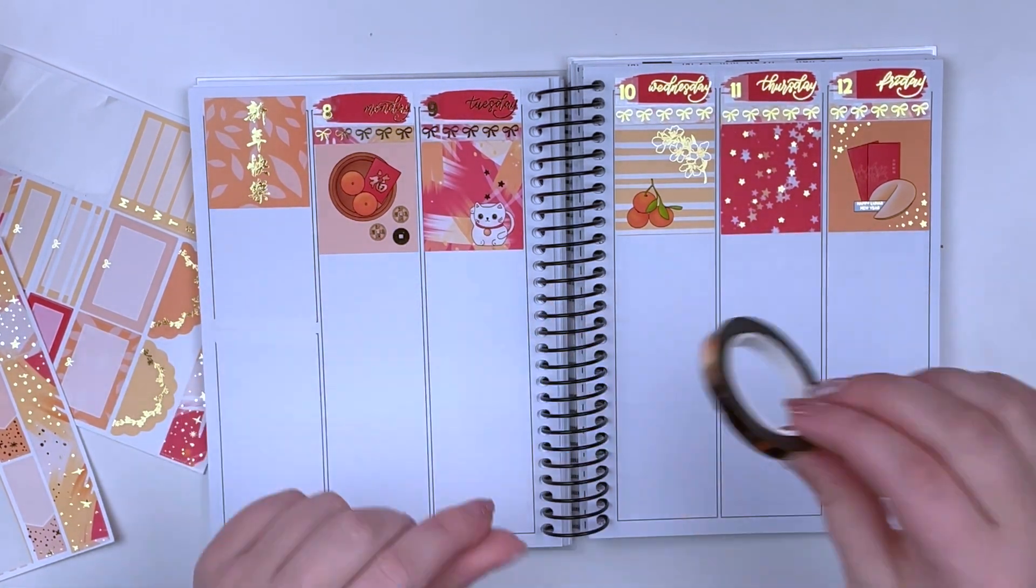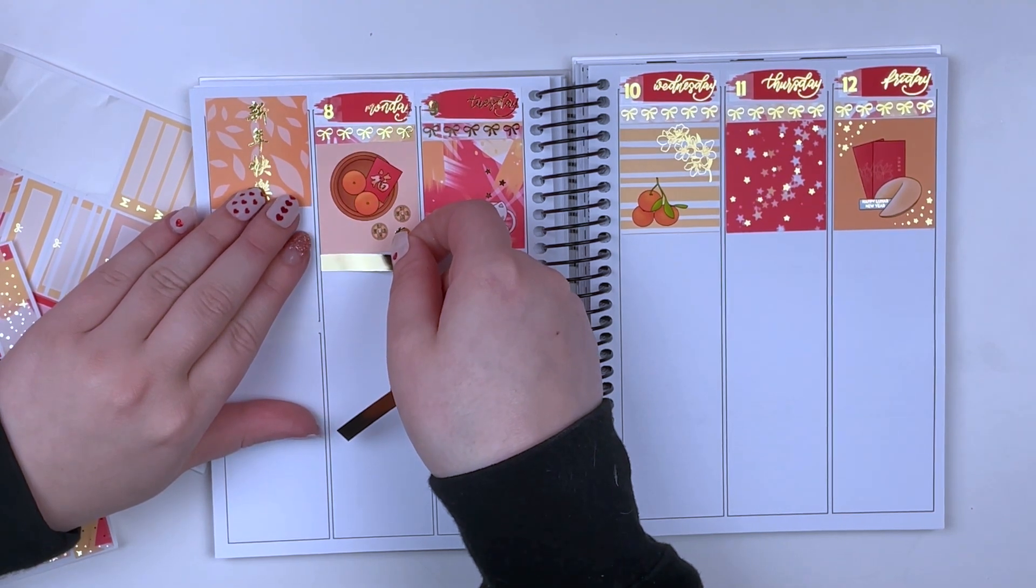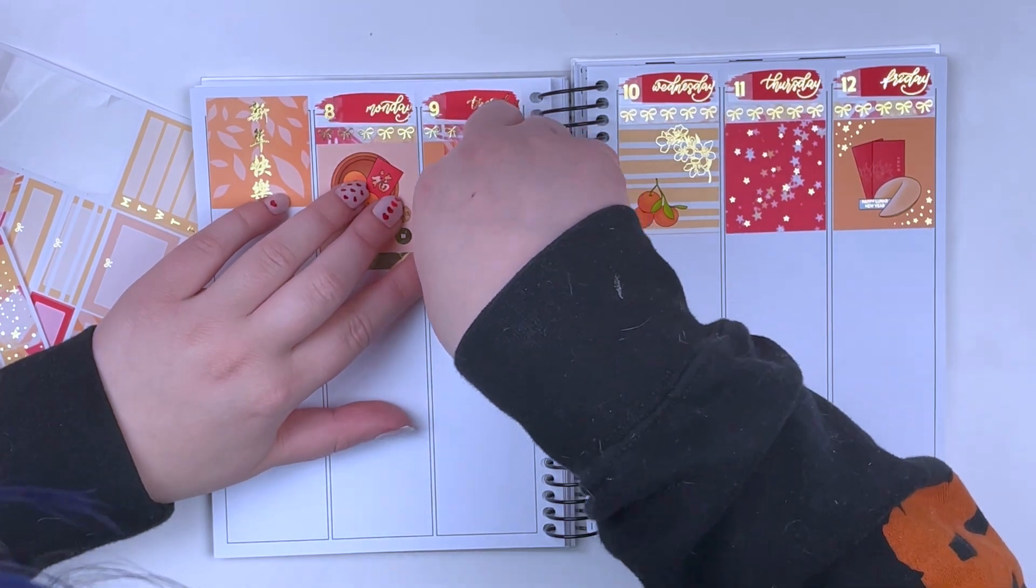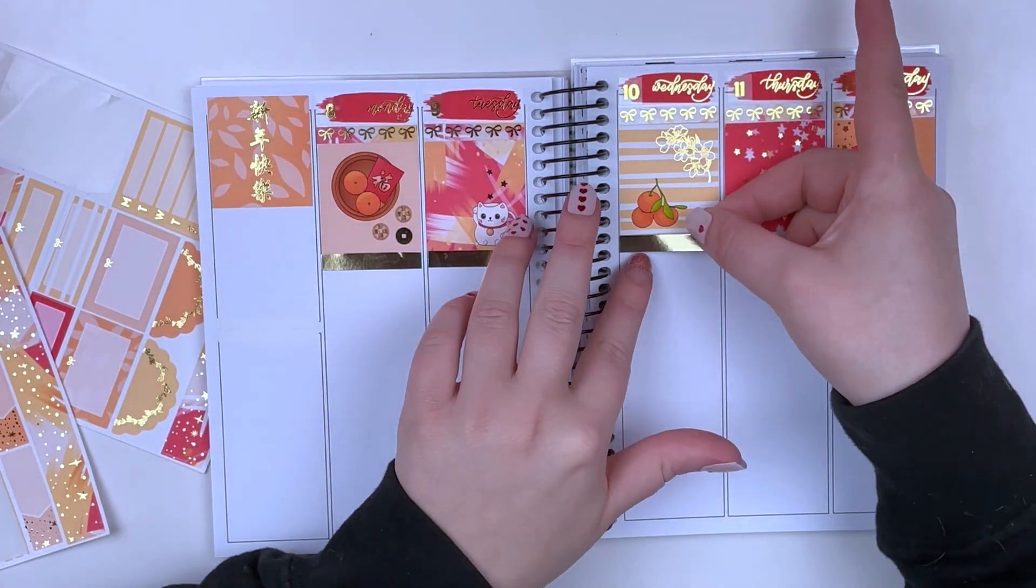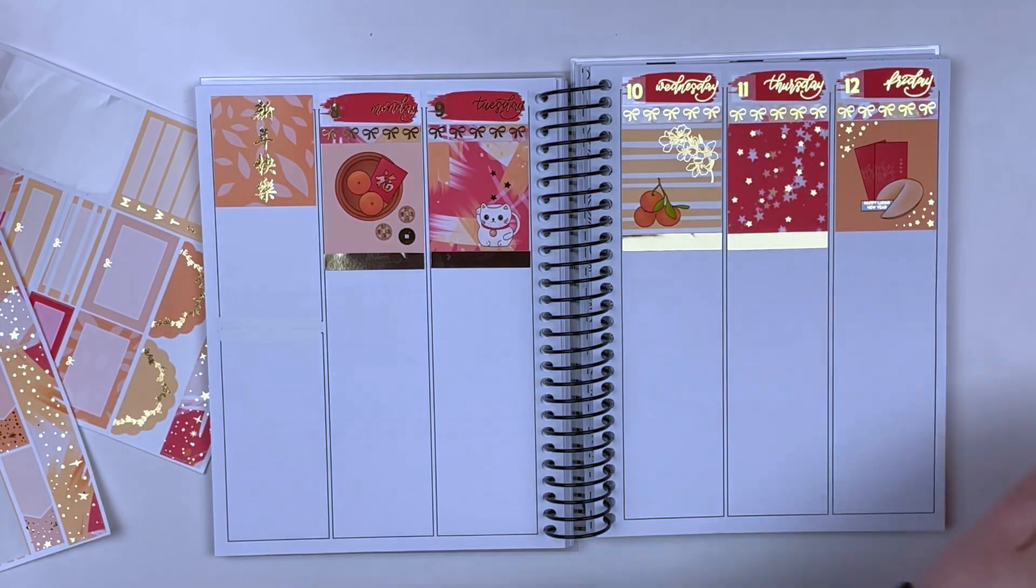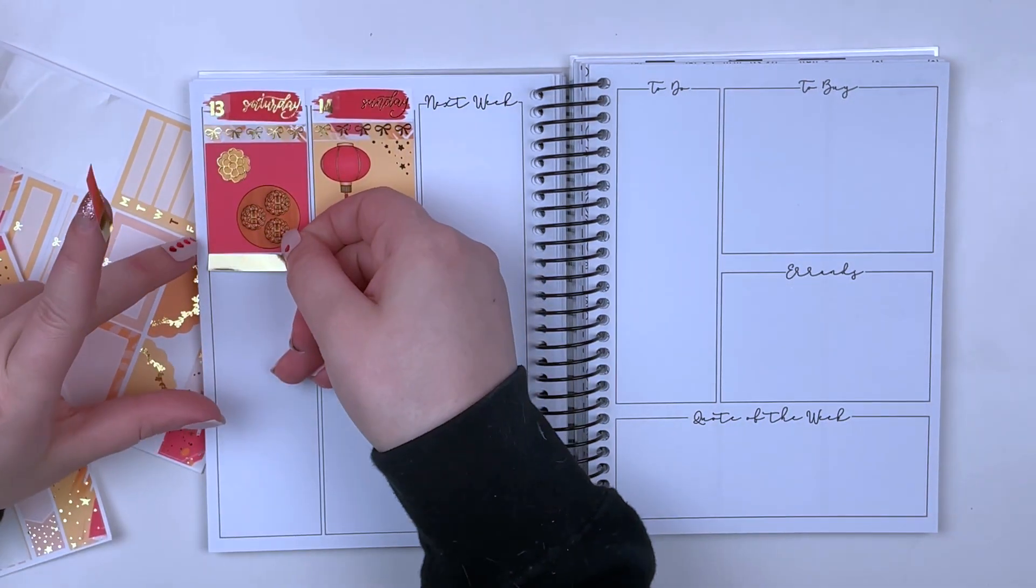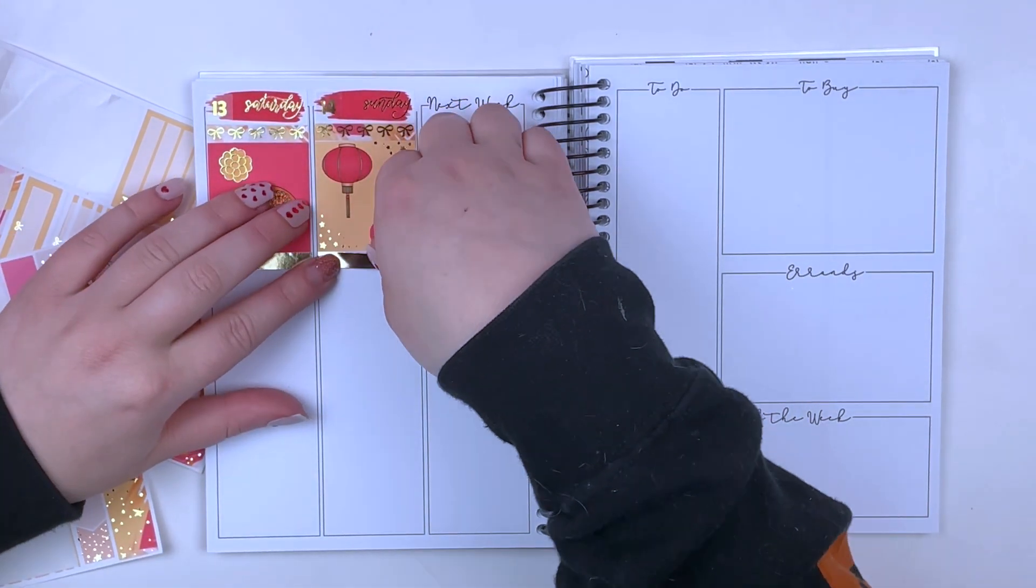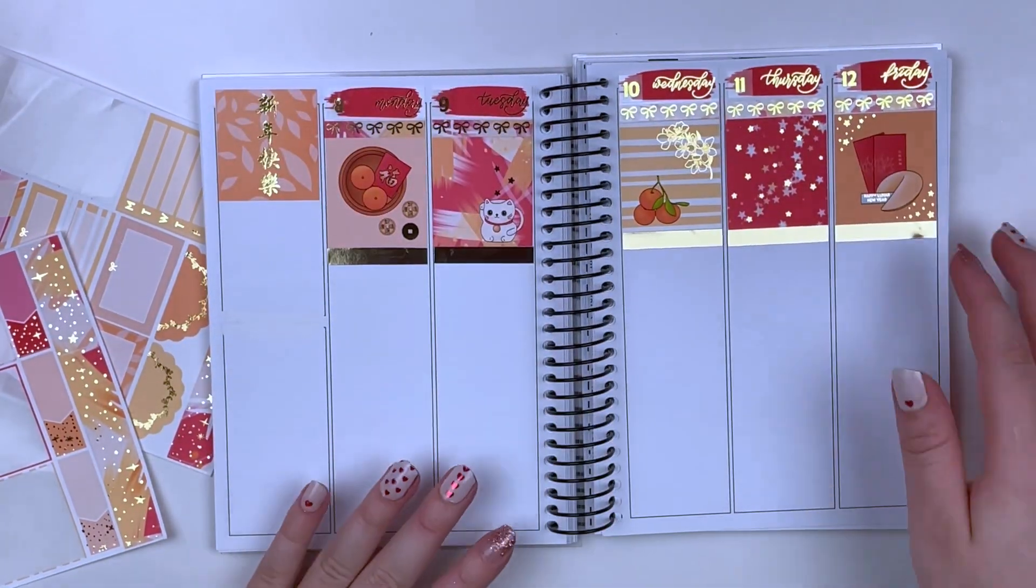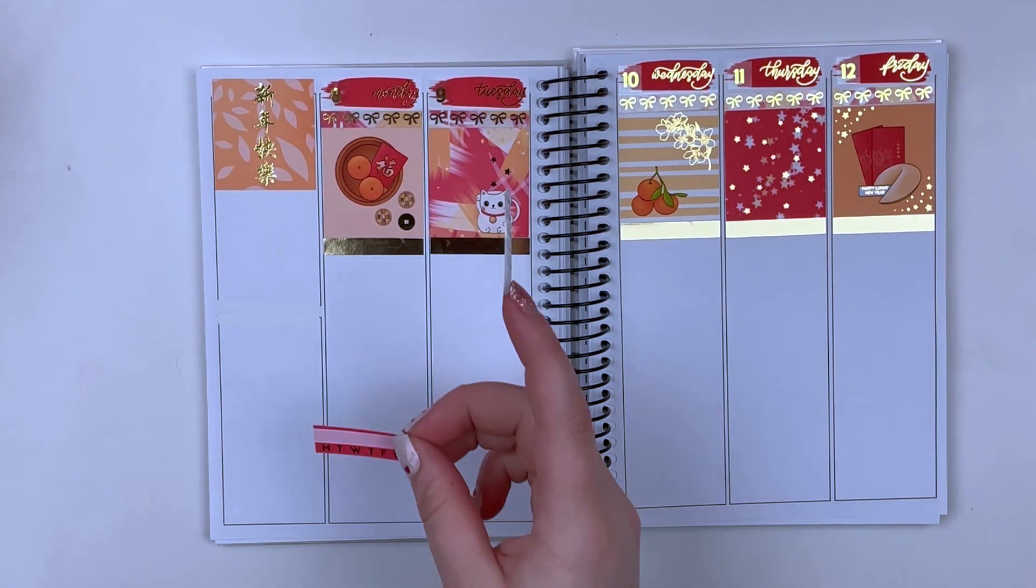I would recommend to not get a tattoo in a super painful spot for your first one. However, if there's a tattoo that you really want to get and you really want to get it in a certain spot, then do that, you know. It's going to be over quicker than you think and it's going to be beautiful in the end. My first tattoos that I got were on my wrists, which is a pretty easy spot for me. But also, pain is different for everybody. So what's easy for me might be hard for you and vice versa. That's kind of the advice that I can give.